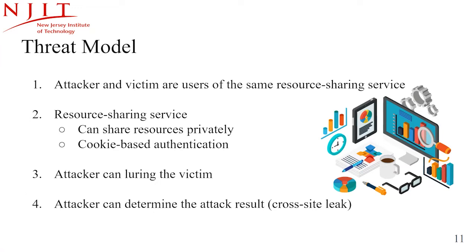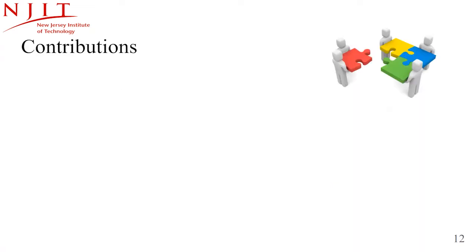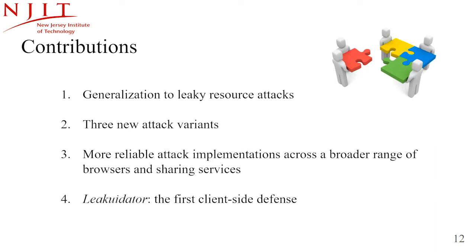For requirement 1, resource sharing services are very popular so the victim may already have an account, and since many offer free membership the attacker can simply create one. For requirement 2, cookies are the de-facto authentication mechanism for many services — some, like Google Drive, even offer the option to not notify target users when a file is shared with them. Requirement 3 can be achieved via phishing emails or a buttonhole approach. During our experiments, we realized the attack works with other file types such as video and audio files, so we call them leaky resource attacks instead of leaky images.